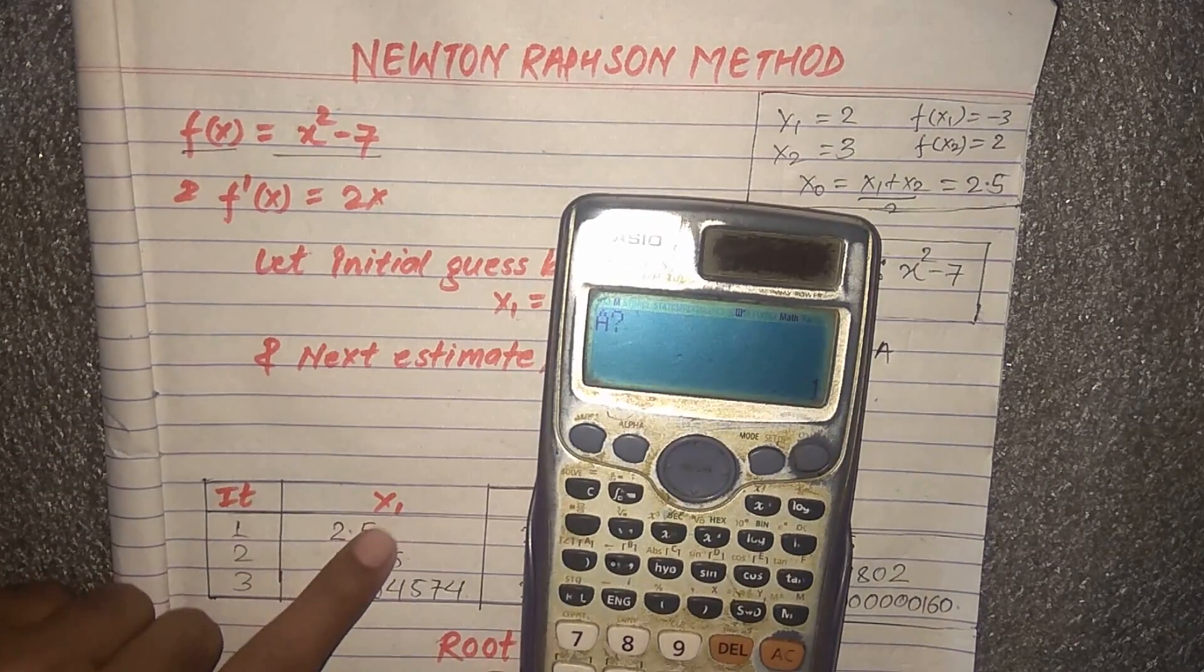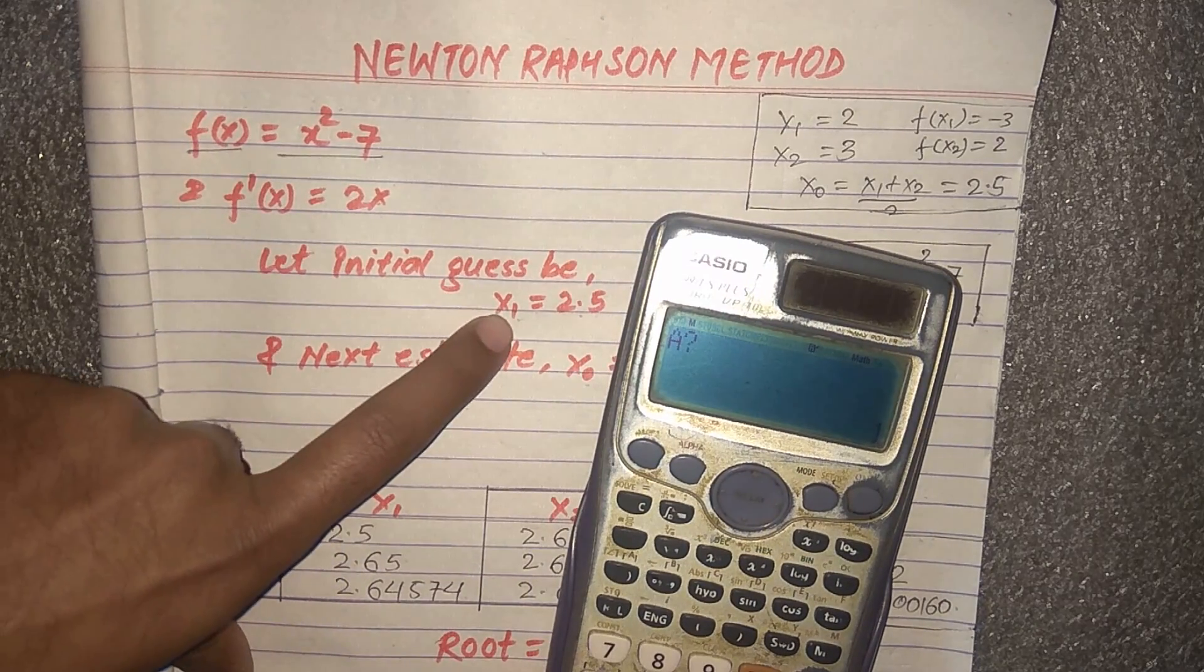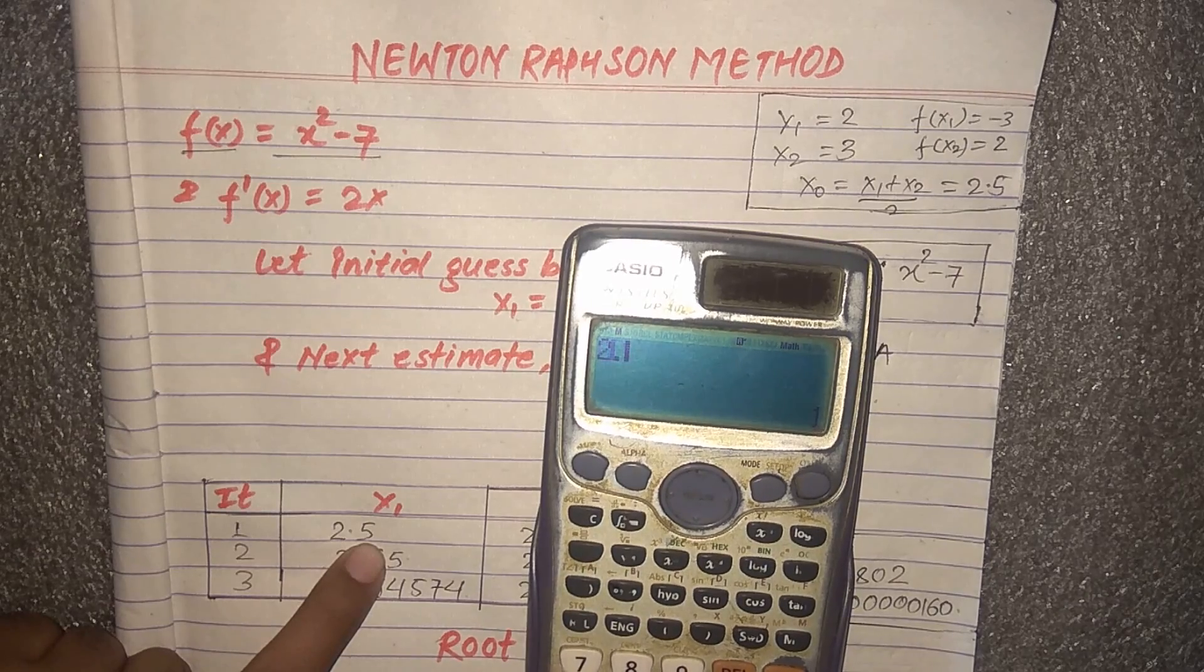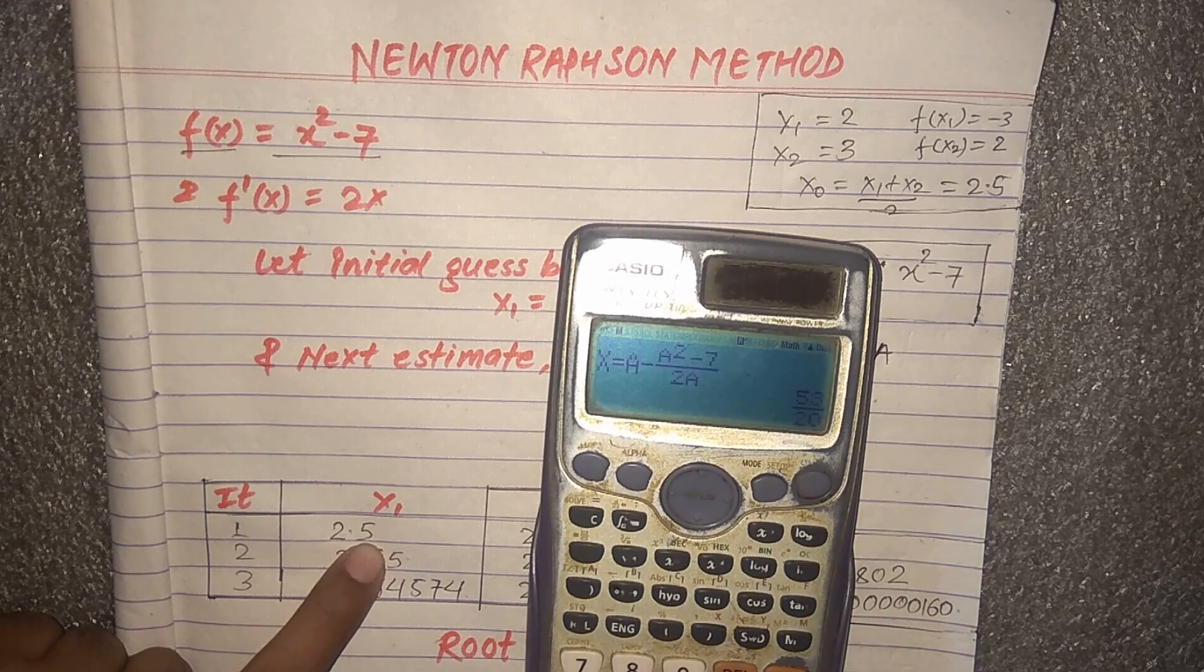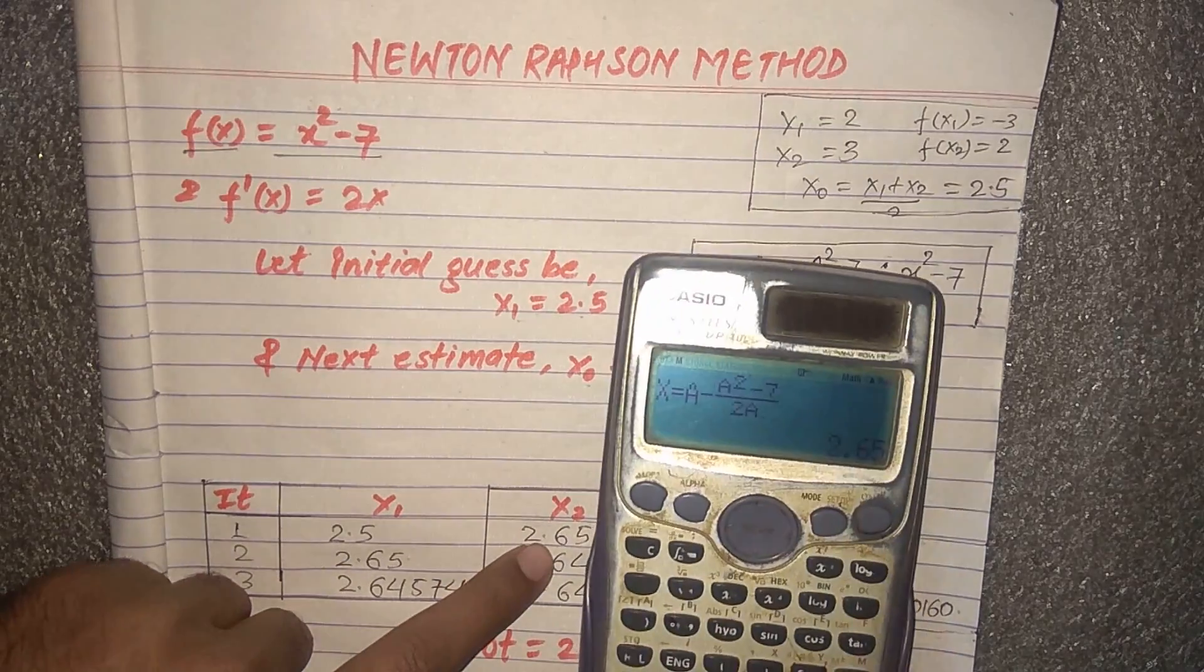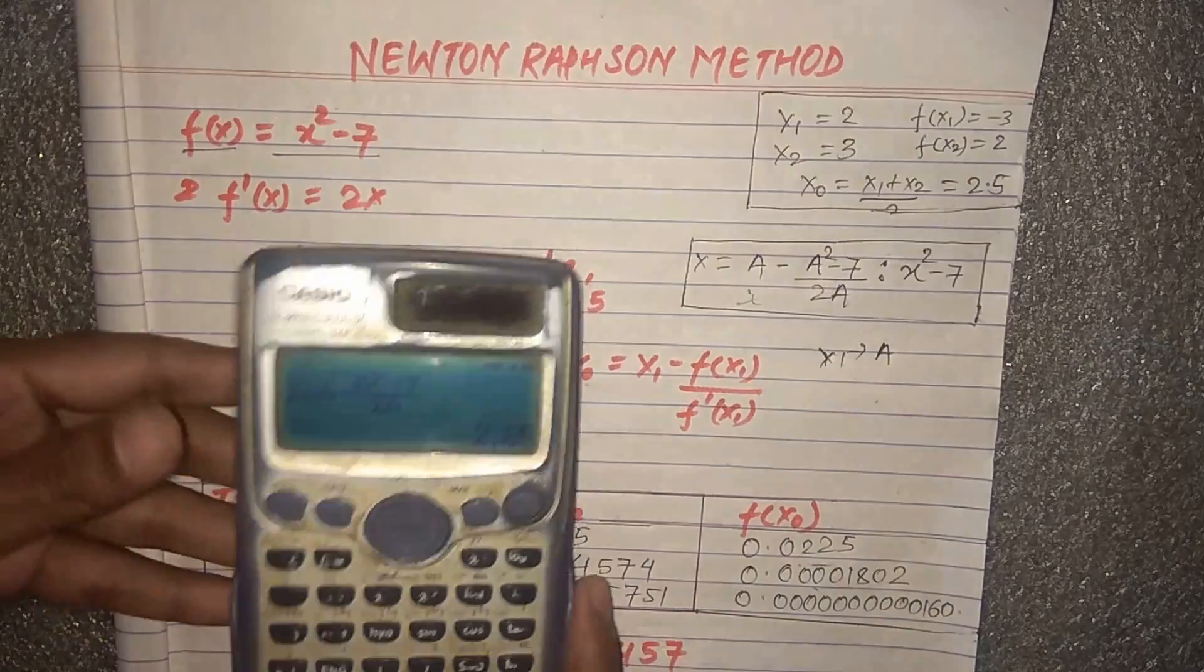This equation in the calculator. We have our initial guess x₁ = 2.5, so we have a = 2.5. We'll put 2.5.